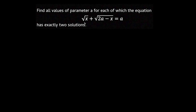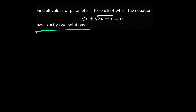In this video we're going to focus on this equation. We're going to find all of the values of parameter A for each of which the equation has exactly two solutions. I'm going to show you four different solutions, each one better than the previous one, and I'll try to keep it straightforward and fast. So let's move on to our first solution.